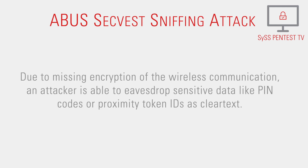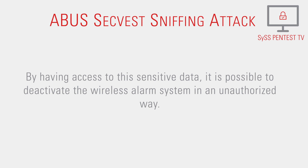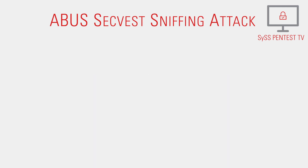Due to missing encryption of the wireless communication, an attacker is able to eavesdrop sensitive data like PIN codes or proximity token IDs as cleartext. By having access to this sensitive data, it is possible to deactivate the wireless alarm system in an unauthorized way.